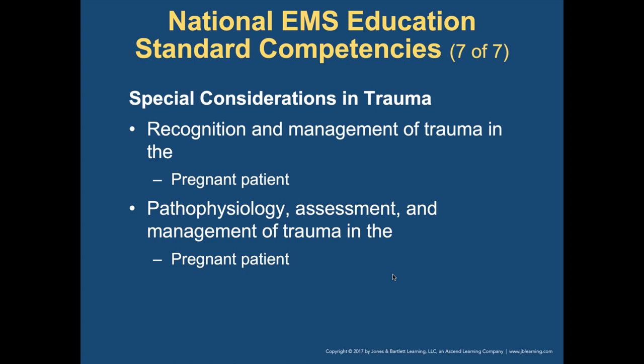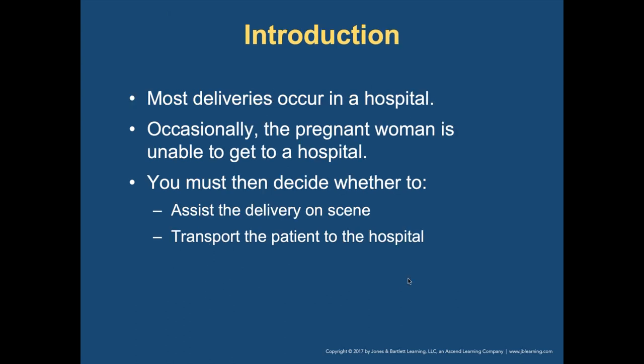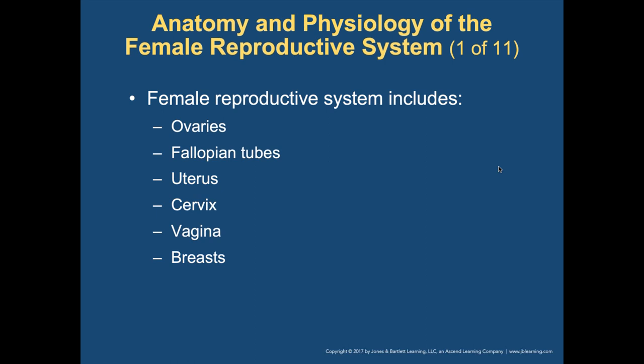Special populations include multi-system trauma of the pregnant patient, pediatric patients, and geriatric patients — they're all special in their own ways and dangerous to think about. We'll cover pediatric, geriatric, and cognitively impaired patients. Most deliveries occur in a hospital with doctors and nurses ready, but occasionally birth moves faster than expected and may not make it to the hospital. You must decide whether to assist delivery on scene or transport — how far away is the hospital, how fast can you get there, and how frequent are the contractions.